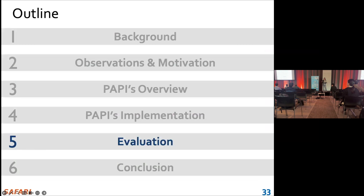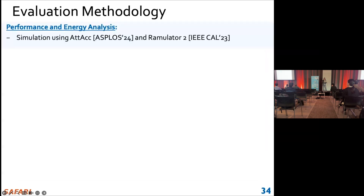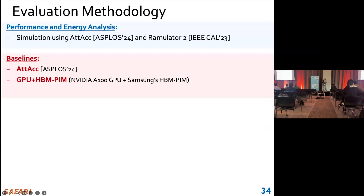Next, let's look at our evaluation. We evaluate PAPI's performance and energy using a simulator provided by the baseline framework, which is based on Ramulator 2. We compare PAPI with three baselines: a state-of-the-art PIM-enabled LLM computing system, a PIM with HBM processing units, and a PIM-only processing units system.